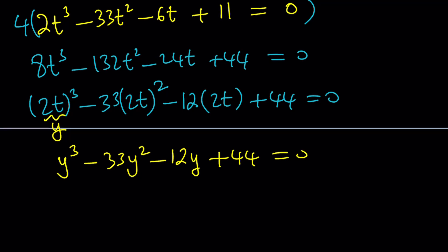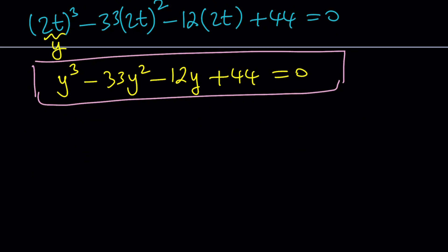We get Y cubed minus 33Y squared minus 12Y plus 44 equals 0. This is not only a monic polynomial, but it's a very special type because if you check the sum of the coefficients, hopefully you did, you're going to realize that they add up to 0. Isn't that awesome? And that means Y equals 1 is a solution. And then set it equal to 2T because Y is equal to 2T, and from here you get T equals 1 half.